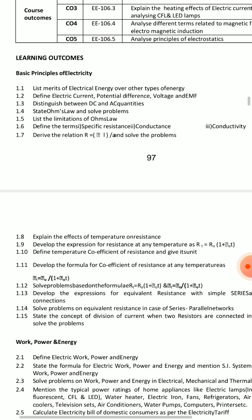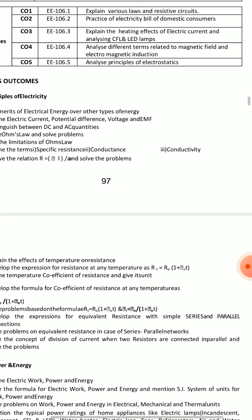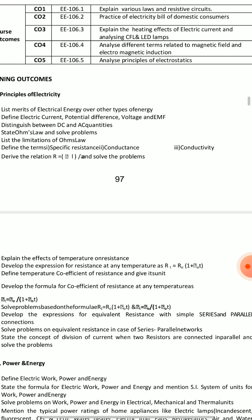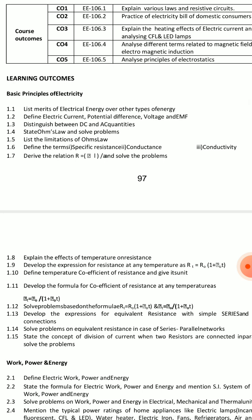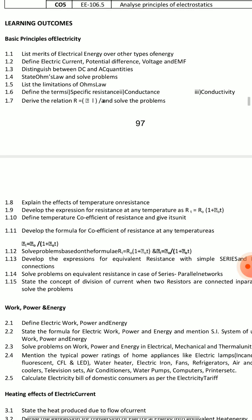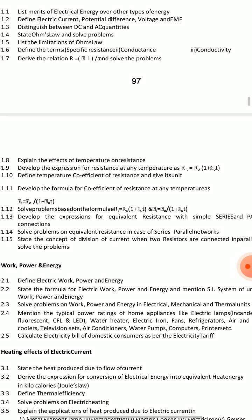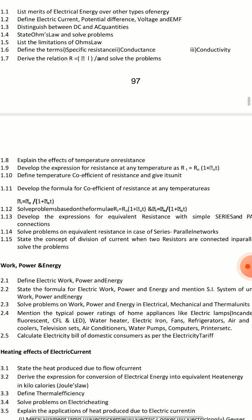Important short answer questions include: state Ohm's law (first important short). Then define specific resistance, conductance, and conductivity (second important short). Third, define electric current, potential difference, voltage, and EMF. Also cover limitations of Ohm's law. Develop the expression for resistance at any temperature: RT = R0(1 + αT) — this is a very, very important question.